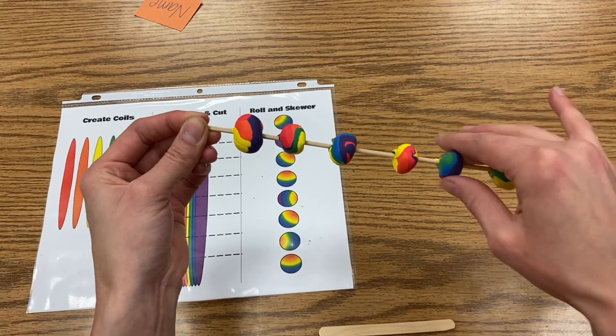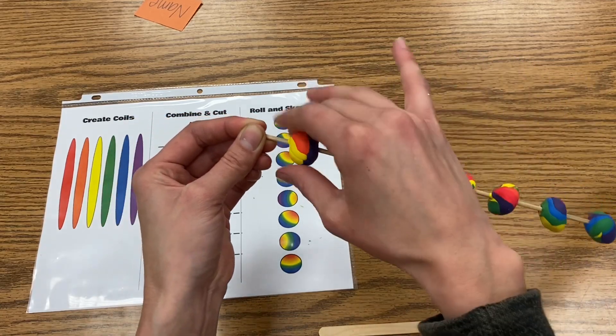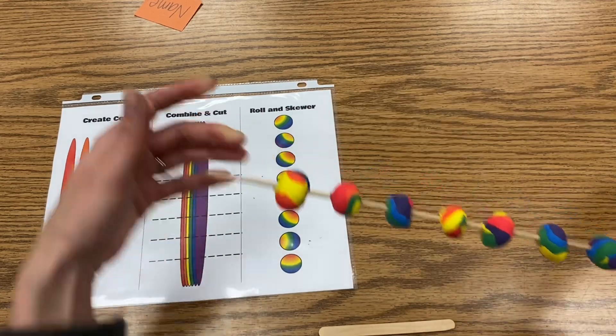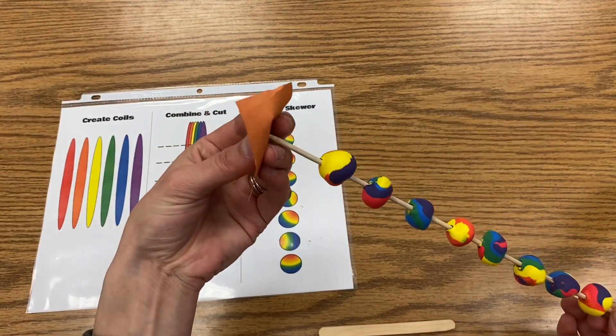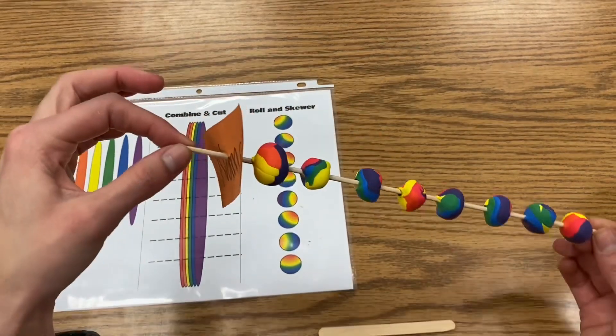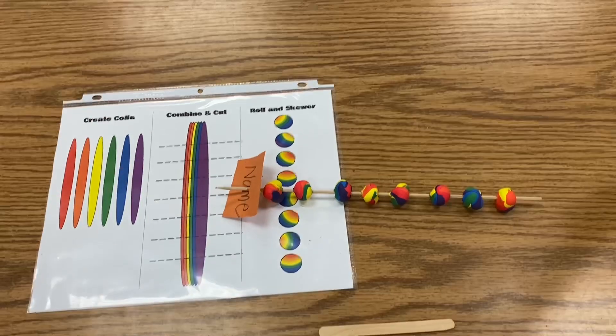And once you have all of them on and they're all spaced out, the most important thing at the end here is that right now they kind of all look the same. So if you want to get back yours, you're going to take your little name tag and you're also going to skewer your name so that I can keep your beads with your name tag and you'll get them back next time.